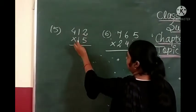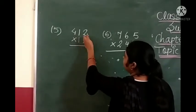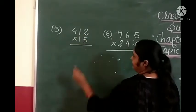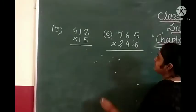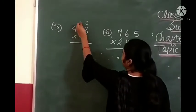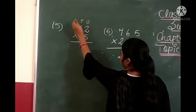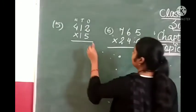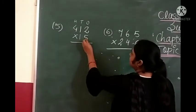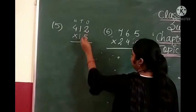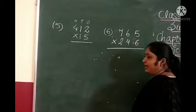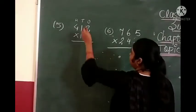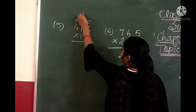Now 3-digit multiplication. Here we have 412 multiplied by 50. We start from the ones place, then the tens place, then the hundreds place. Start with ones place: 5 multiplied by 2. 5 twos are 10. Write 0 and carry 1 over.